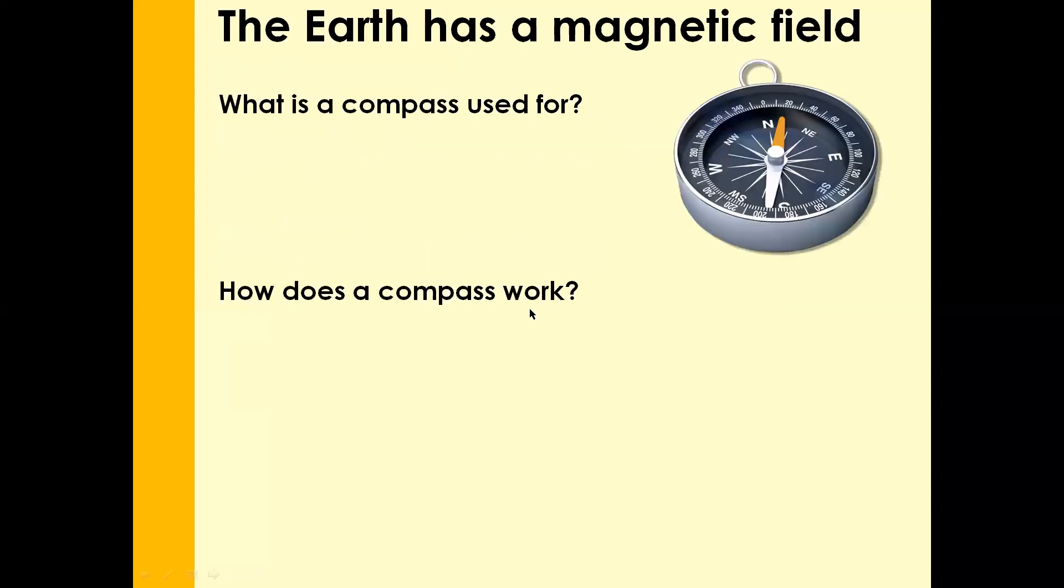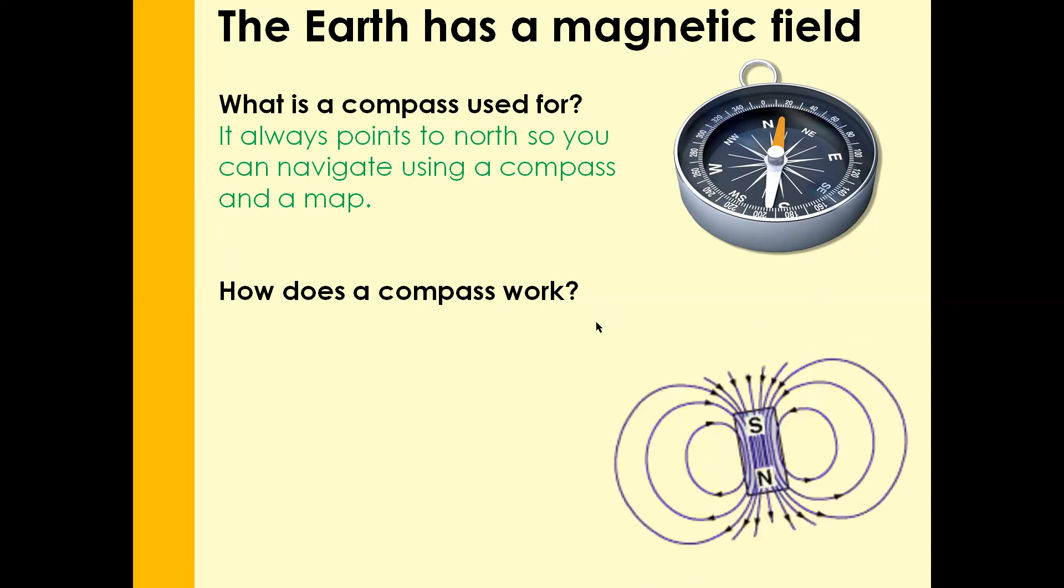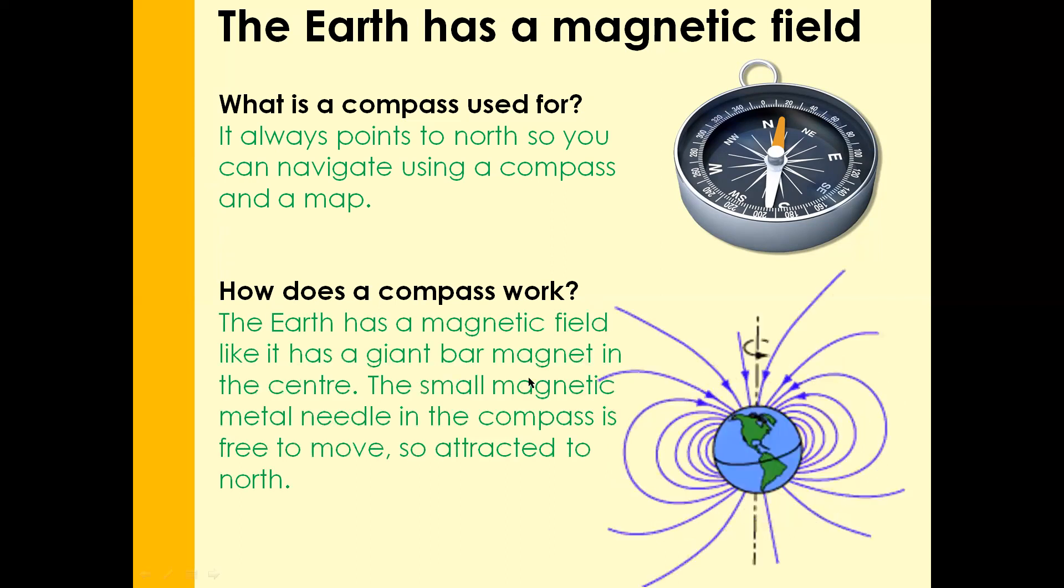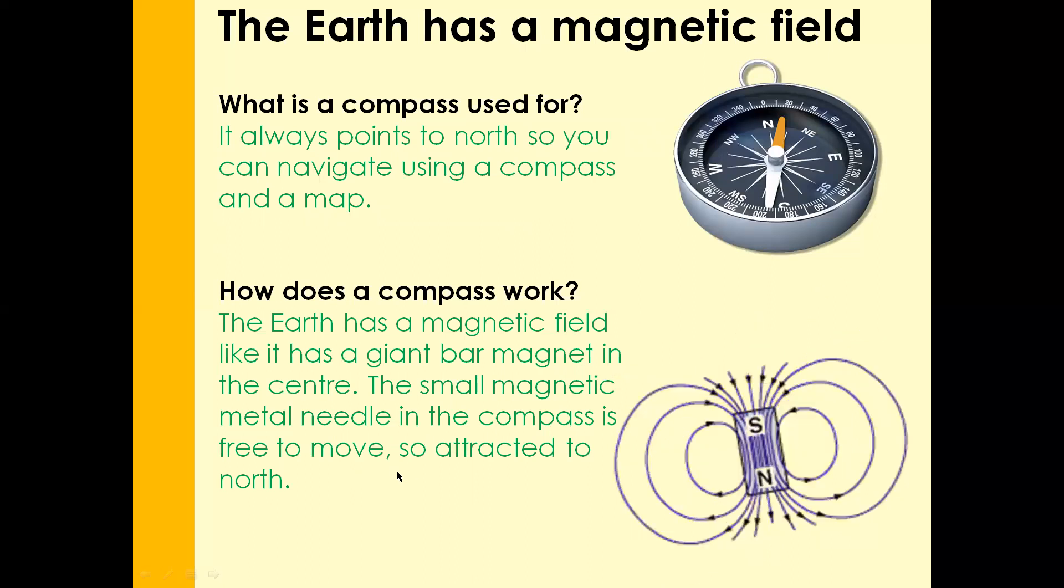Quick two questions for us to answer. What is a compass used for? And how does a compass work? Pause the video. Give it a go. Three, two, one. Just have a look at the answers. We all know we use compass for navigation. And how does the compass work? The earth behaves like a giant magnet. And the small magnetic metal needle in the compass always points towards north.